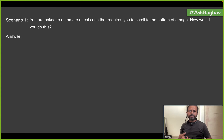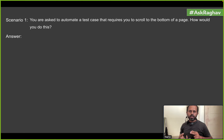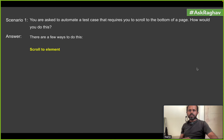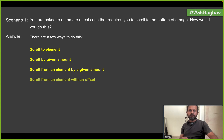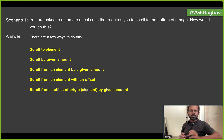You can scroll by the X and Y indexes — specifying how much to move right and how much to move down on the page. You can also take some origin point and scroll from there. So the options are: scroll to element, scroll by a given amount, scroll from an element by a given amount, scroll from an element with an offset, and scroll from an offset of origin element by a given amount. Keep these options in mind.